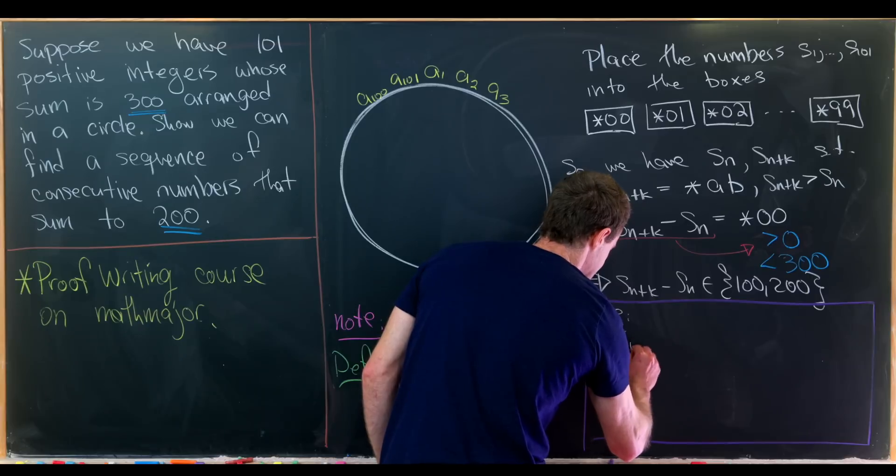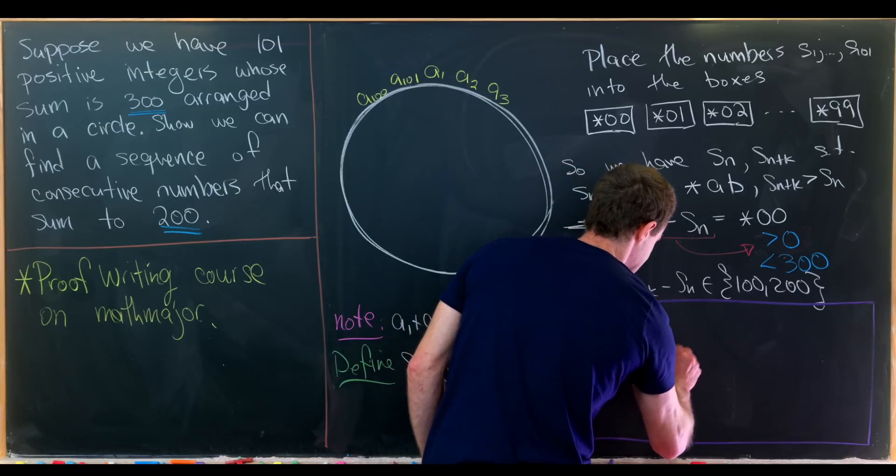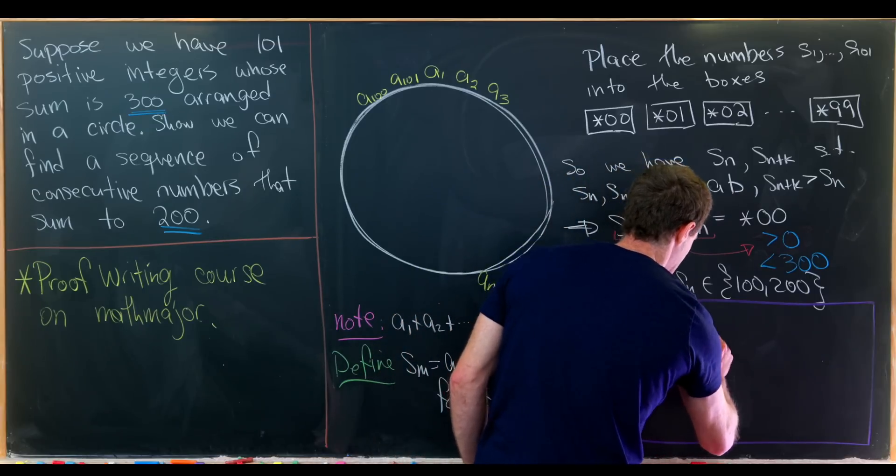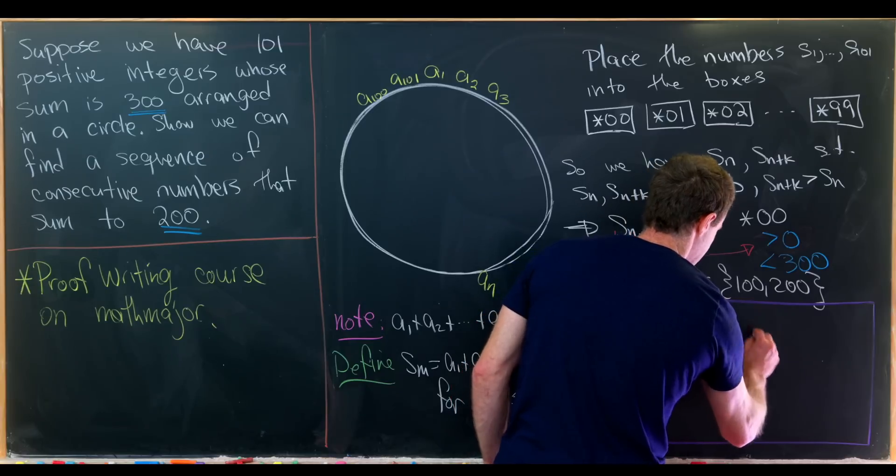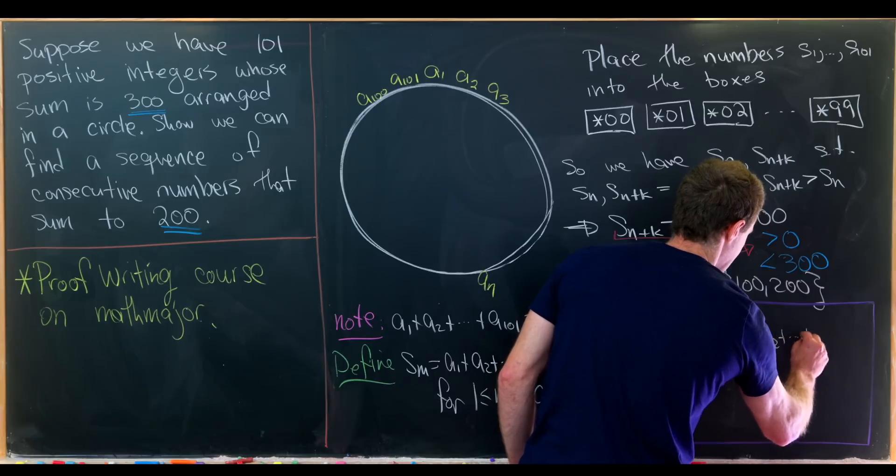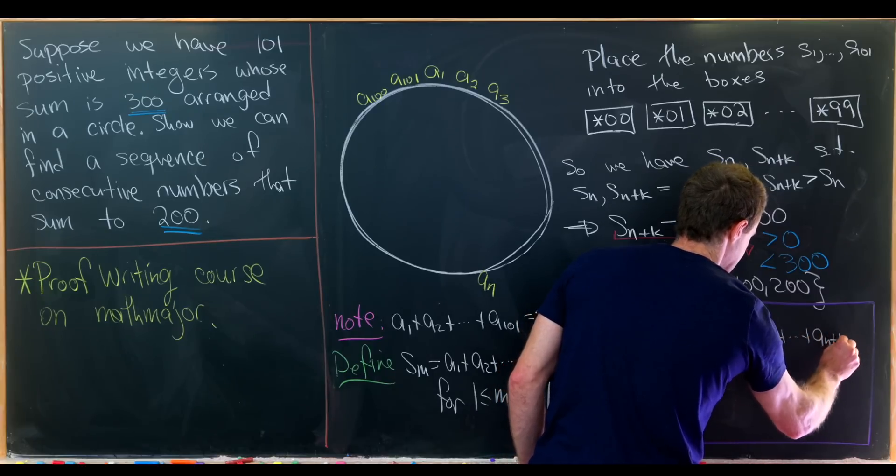So we've got s sub n plus k minus s sub n is in fact an plus 1 plus an plus 2 all the way up to an plus k.